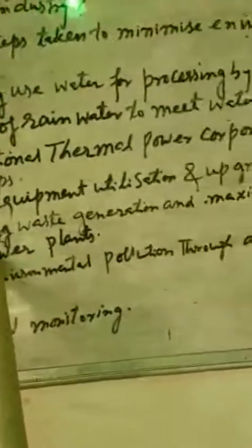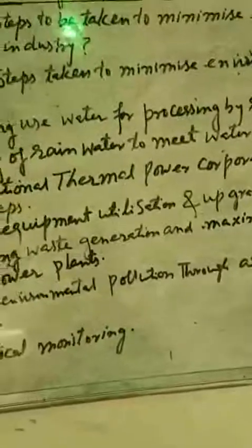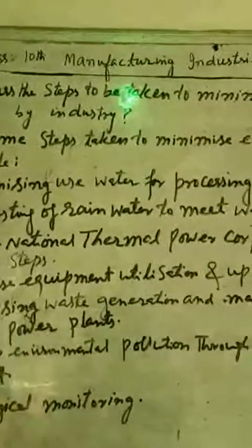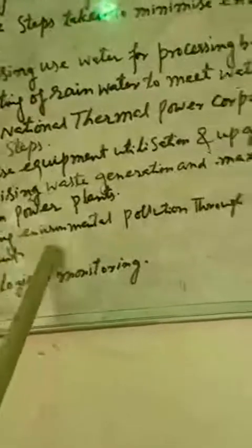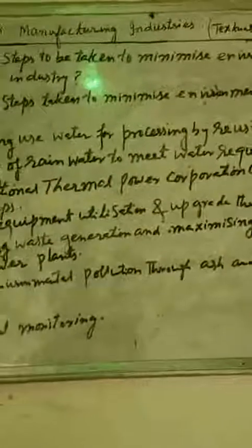The second step is minimizing waste generation and maximizing the use of waste, like ash from power plants. The third step is reducing environmental pollution through ash and liquid waste management systems — a proper system should be made so that ash and liquid waste from industries is reused, and minimal waste and ash exits the industry.